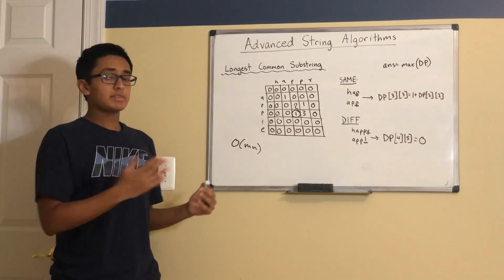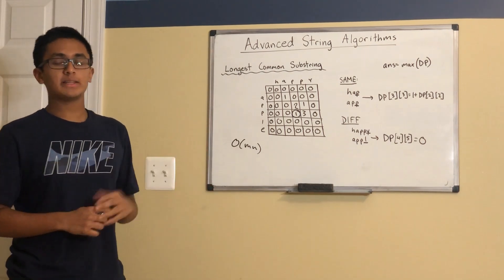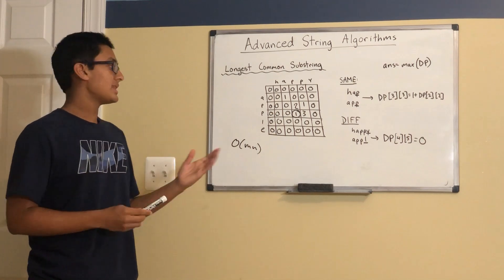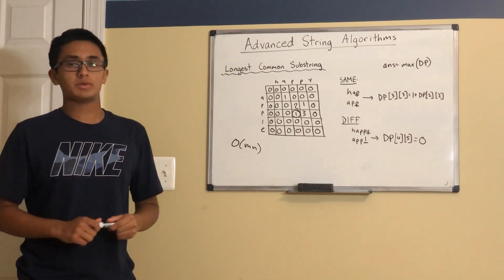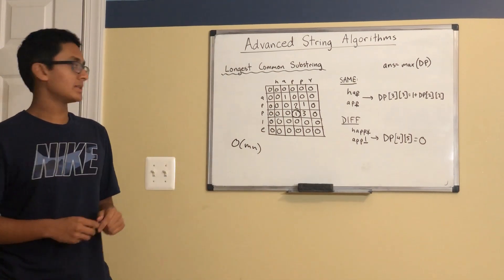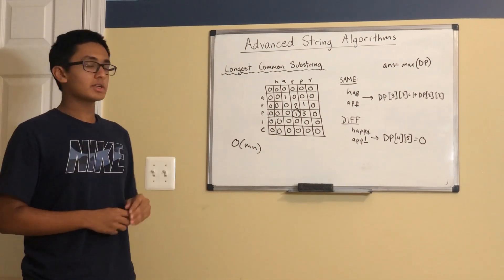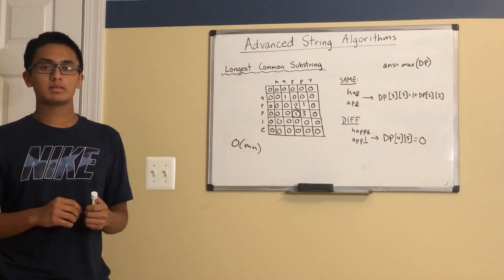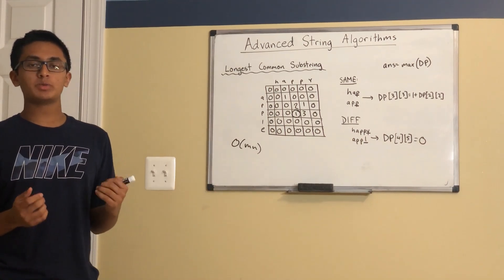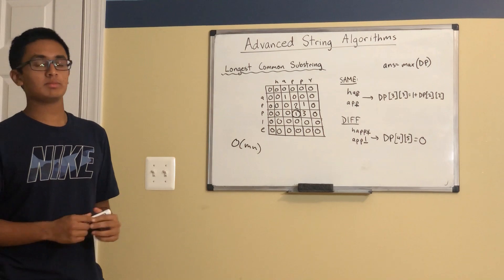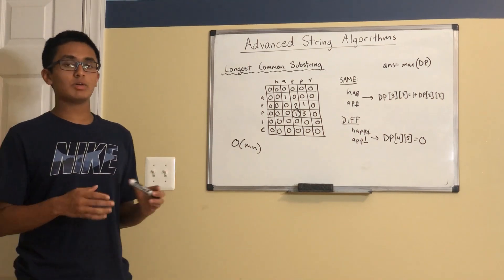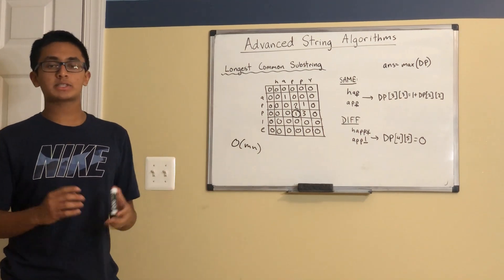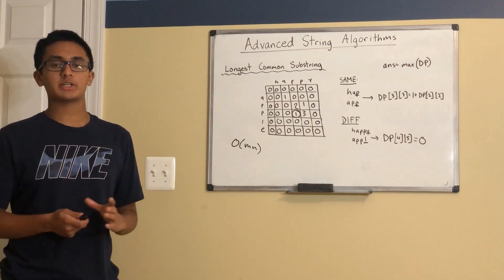At the end of this process, what we have to do to find the answer is traverse through the entire table and find the maximum value. Because of this operation, our overall time complexity is O(m × n). Later in the lecture, we will revisit this problem and find a solution that is O(m + n) using some of the more advanced data structures for strings.